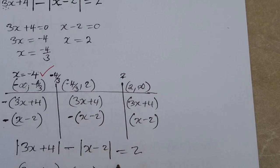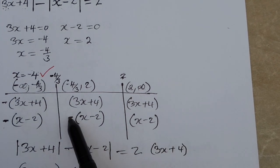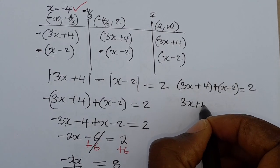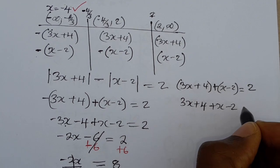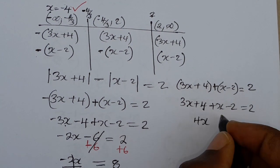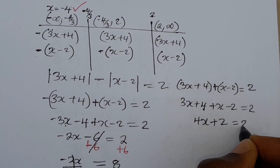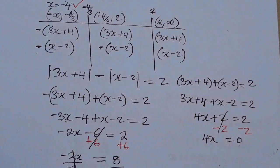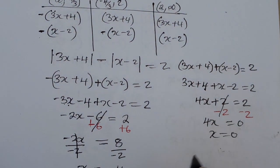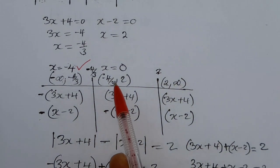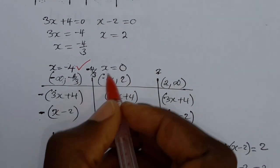For the second interval, we have positive (3x plus 4) and the minus sign combined with negative (x minus 2) gives a positive, so 3x plus 4 plus x minus 2 equals 2. This gives 4x plus 2 equals 2. Subtracting 2: 4x equals 0, so x equals 0. Since 0 lies within the second interval (between negative 4 thirds and 2), we accept it.